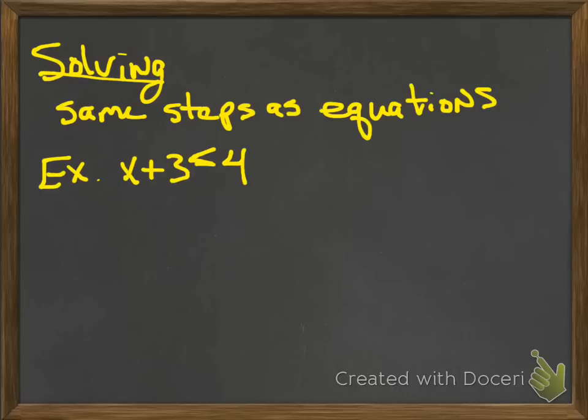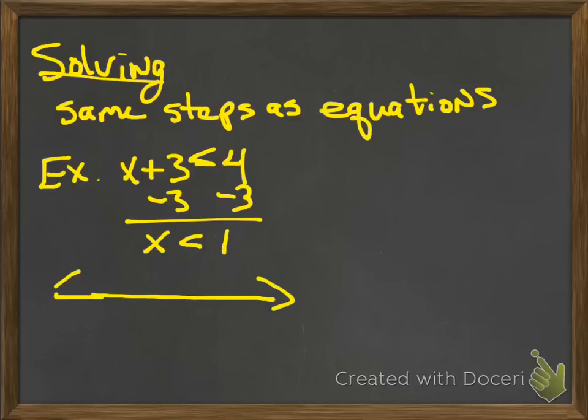All right, so here we want to, we're going to solve the same steps as you did with the equation. So the same steps that you did on your last test, you're going to do here. And we're going to stick to some very simple one-step stuff first. Tomorrow, or the next time, we'll look at two-step, and multiple-step. So here, I see x plus 3 is less than 4. So how do I solve that? What's the opposite of a plus 3? Minus 3. Minus 3. So x is less than 1.